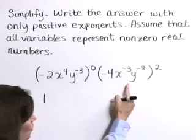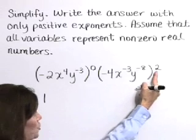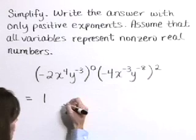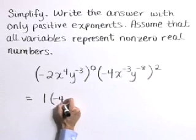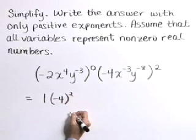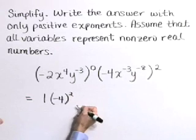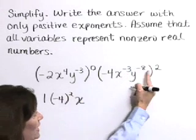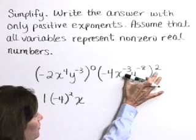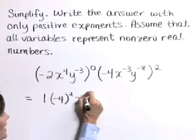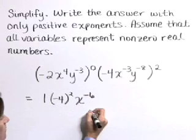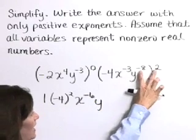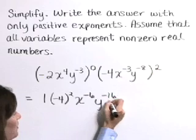Now let's focus on our second quantity here. Let's apply that 2 exponent to each of our factors, starting with negative 4 quantity raised to the second power times x to the negative 3 raised to the second power. Here we multiply those exponents. So this becomes x to the negative sixth times y to the negative eight times two, or negative sixteenth power.